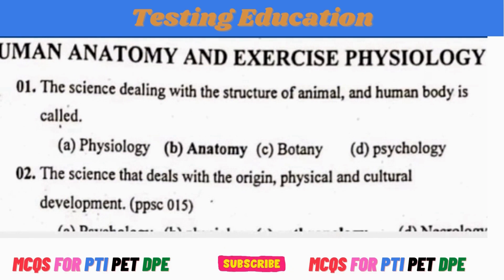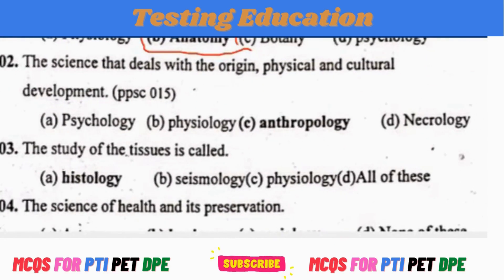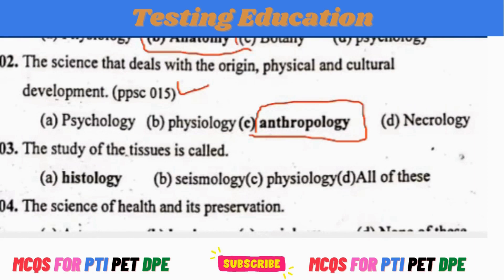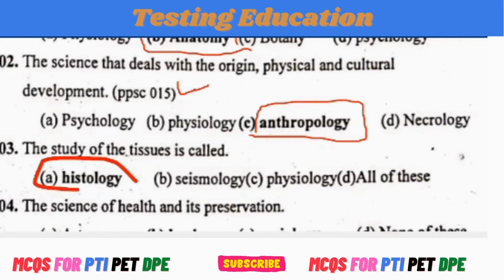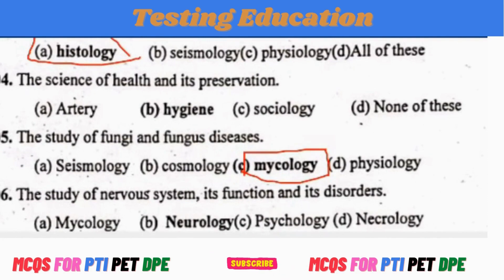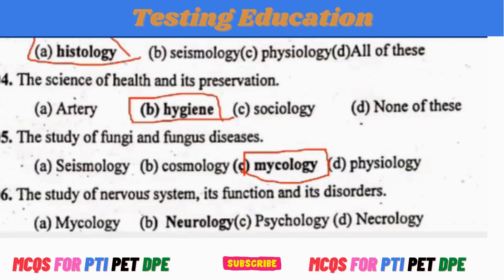The science dealing with the structure of animal and human body is called Anatomy. The science that deals with the origin, physical and cultural development is Anthropology. Punjab Public Service Commission has given this question in 2015. The study of tissue is called Histology. The science of health and its prevention is Hygiene. The study of fungi and fungus disease is Mycology.